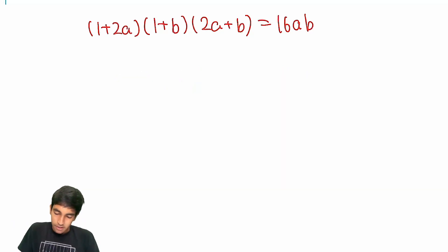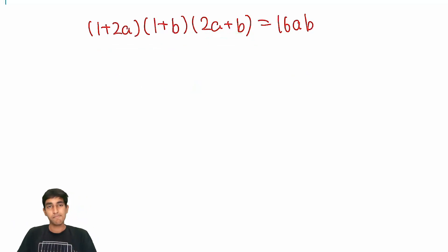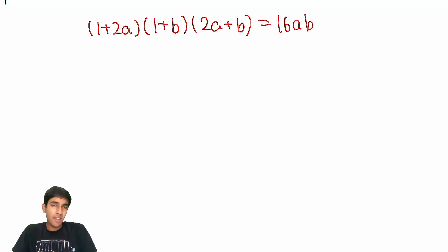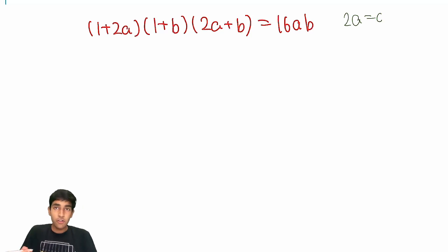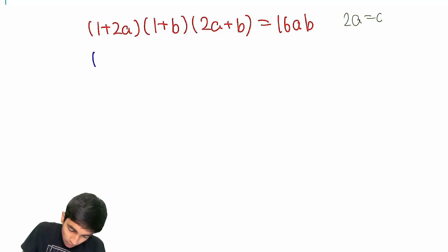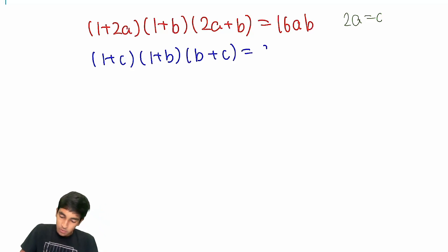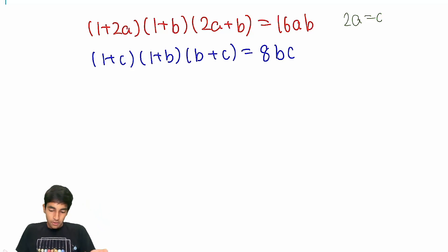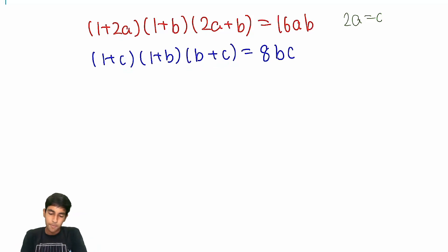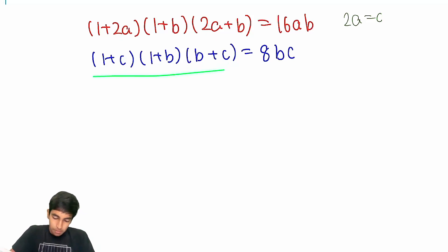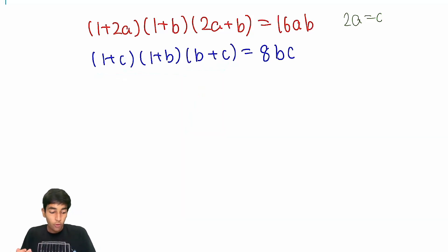The expression (1 + 2a)(1 + b)(2a + b) = 16ab is a bit ugly. Intuitively, I'd make the substitution 2a = c, which is not necessary but just a preference. Now we have (1 + c)(1 + b)(b + c) = 8bc, which is symmetric — no 2s to deal with. And just like before, the left side completely outpaces the right side, so there may be some upper bound on b and c.